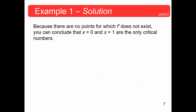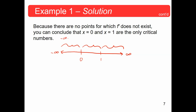We're going to use these critical numbers to create test intervals on a number line, just like we did with rational inequalities to determine whether expressions are positive or negative on a given interval. With critical numbers zero and one, we get three intervals: negative infinity to zero, zero to one, and one to infinity. We just pick a test point in each interval — negative one, one half, and two.